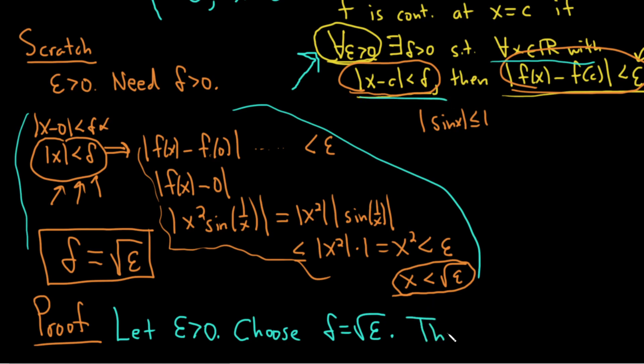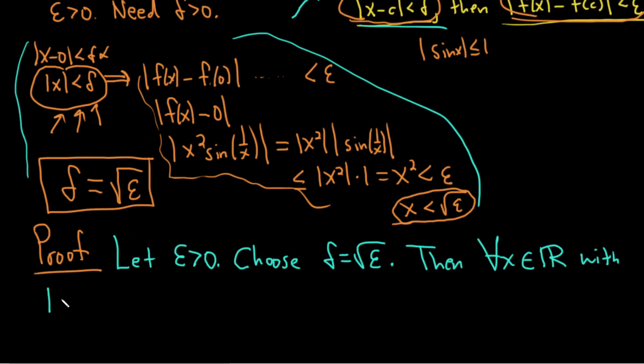so I'll go ahead and write that down. So then for all x in the set of real numbers, that's what the little R means, with. And we have the absolute value of x minus c. So x minus 0 less than delta.